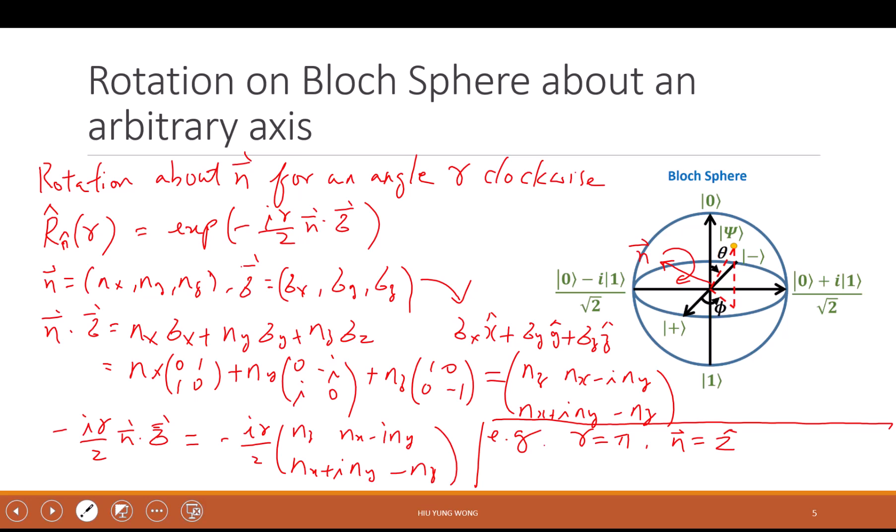This Pauli vector is just σx x-hat plus σy y-hat plus σz z-hat. And n·σ is just equal to this matrix. So the rotation matrix of the rotation about n by γ is just e to the power negative iγ/2 n·σ.